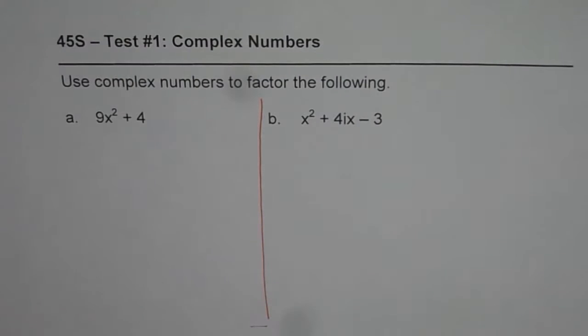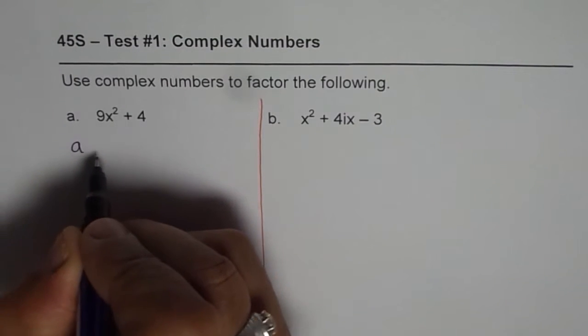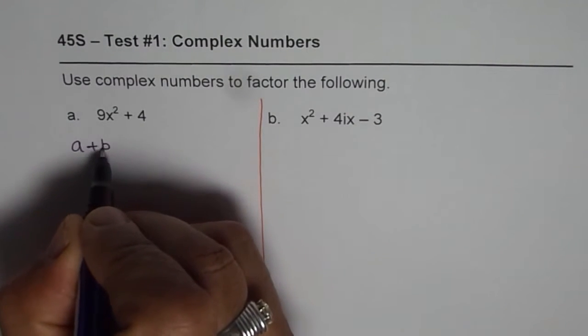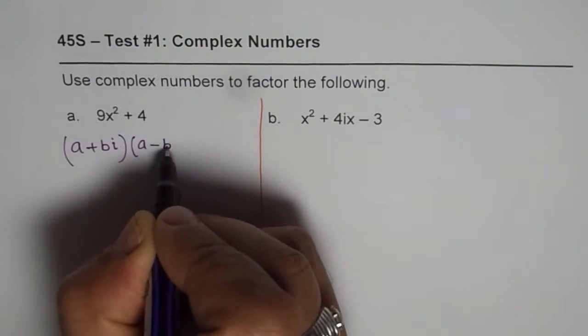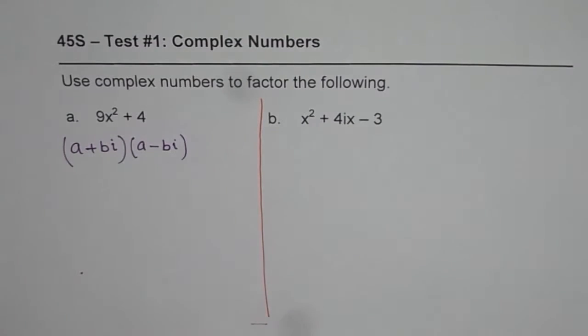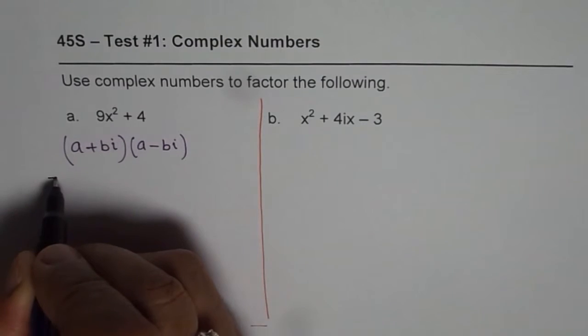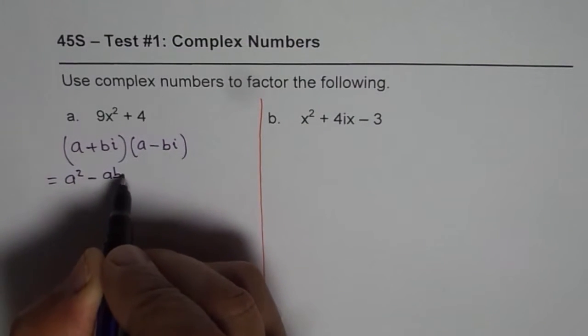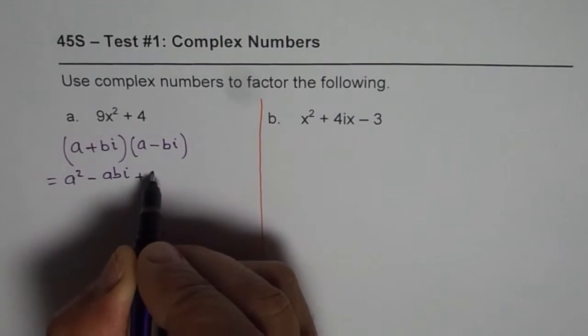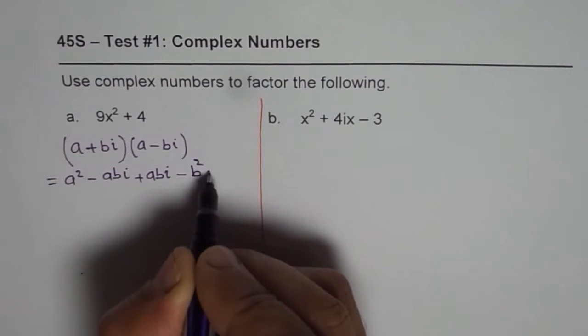Let me first discuss with you the strategy. Now in complex numbers, let us consider two complex numbers a + bi and the other one as a - bi. If we multiply them what do we get? Let us multiply and check. a times a is equal to a², then we get -abi. When you multiply bi with a you get +abi and here you get -b²i².